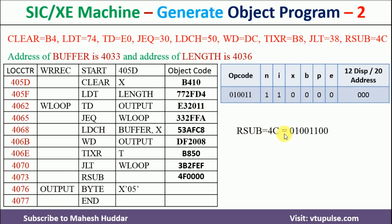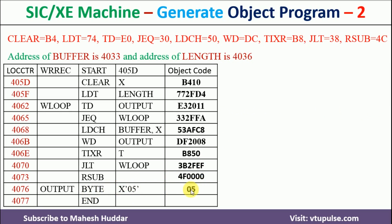Next is RSUB, whose mnemonic code is 4C. Most significant 6 bits are written. Neither immediate nor indirect, so N=1, I=1. Neither index, base relative, nor program counter relative — it is type 3 with displacement 0. Converting to hexadecimal gives 4F0000. Finally, BYTE 05 stores the value 05, so the object code is simply 05. We also write the starting address 405D of this program.